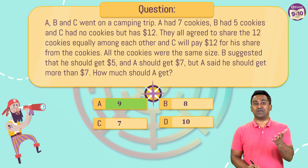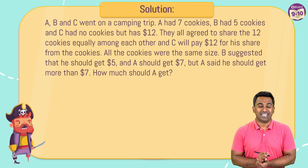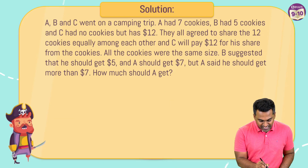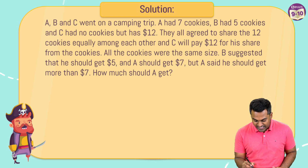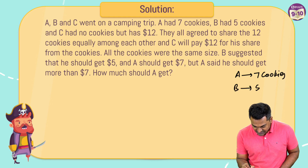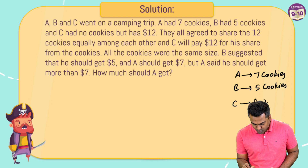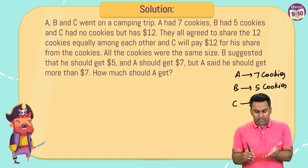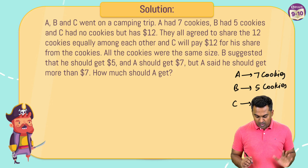The correct answer is going to be option A — nine dollars. Now let's check out how we get nine dollars. So what we have here: A, B, and C have gone on a camping trip. A had seven cookies, B had five cookies, and C does not have any cookies but C has twelve dollars. So C is going to have twelve dollars.